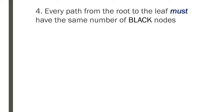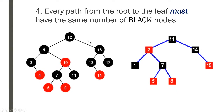The fourth and last rule: every path from the root to the leaf must have the same number of black nodes. Let's take a look at two red-black tree examples. In the first example, let's examine what is meant by root and leaf. As discussed, the root is the topmost node — in this first example, it's 12.